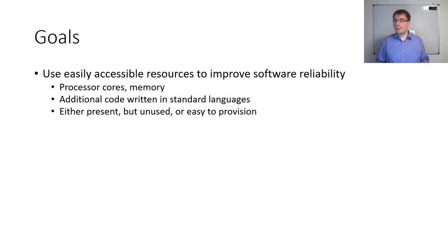As we discuss differential monitoring, it helps keeping the following goals in mind. First, we want to use easily accessible resources to improve software reliability. What we mean by that is that we want to use things like additional processor cores or memory, or additional code written in standard languages. Either of those may already be present in the form of underutilized hardware or existing former versions of some code, but they might also be easy to additionally provision. The tagline for this goal could also be called increasing software safety through overengineering in the good sense of the word.